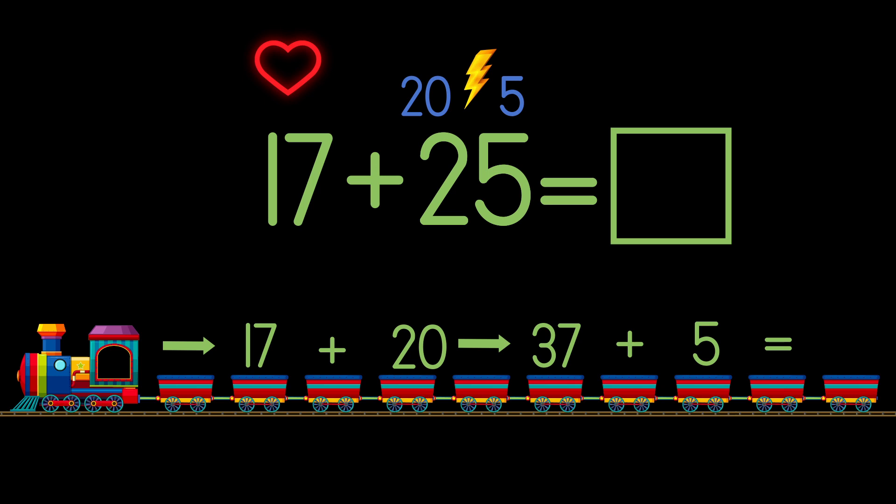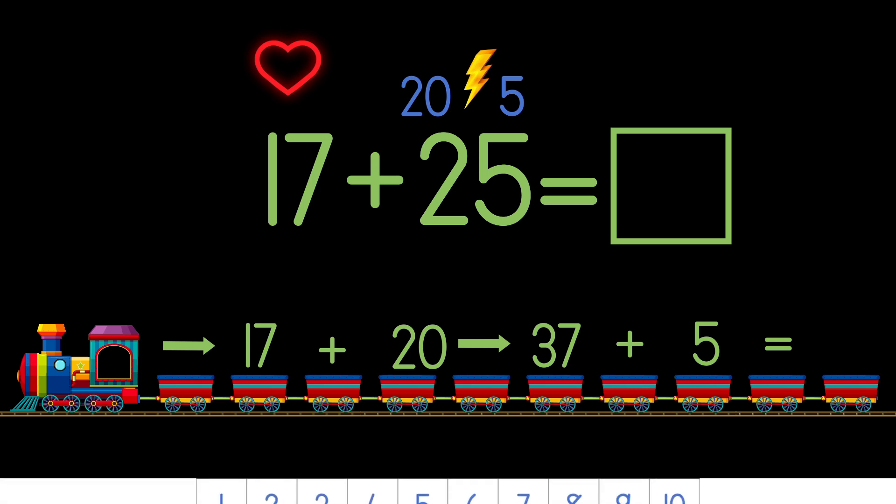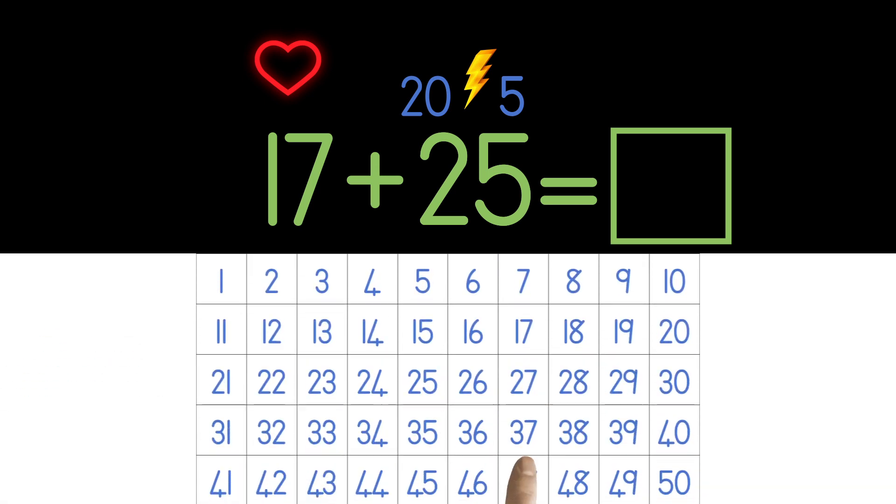You can write in the final answer now or if you are stuck you can go and count in your chart. First we find 37. Then we count five spaces more than 37 to get the answer, which is 42.